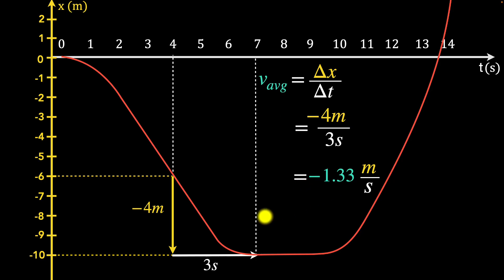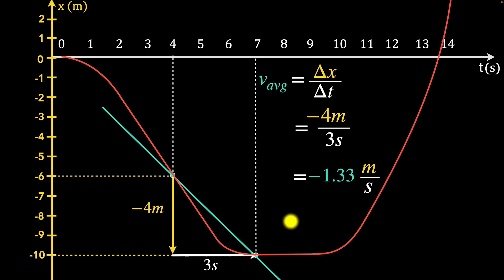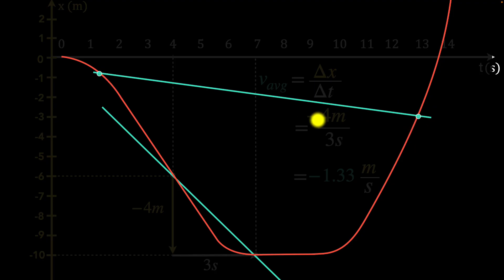What does this represent geometrically? If you draw a line passing through those two points — called the secant — this ratio represents the slope of the secant. So average velocity geometrically is the slope of the secant line joining the two points. Notice it's sloping downwards, which immediately tells us the average velocity is negative. And how steep the secant line is gives a measure of the magnitude of the velocity. For example, a less steep secant means a smaller magnitude of average velocity.